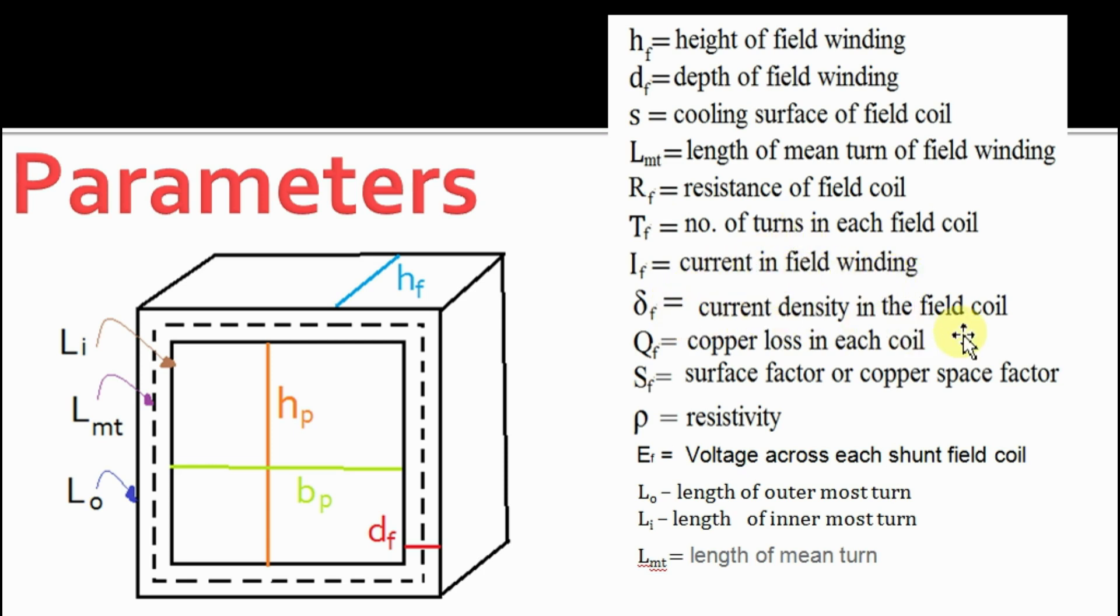qf is copper loss in each coil. sf is surface factor or copper space factor. rho is resistivity. ef is voltage across each shunt field coil. l0 is length of outermost turn. li is the length of innermost turn. lmt is the length of mean turn.